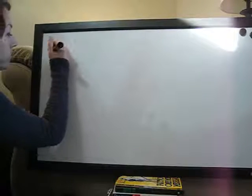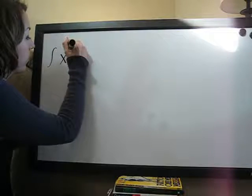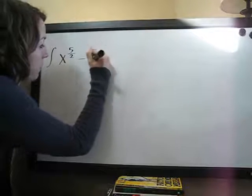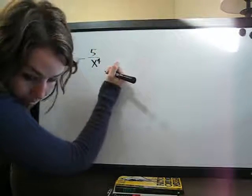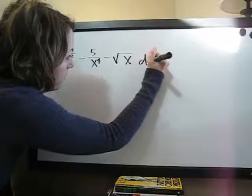Okay, the next problem we're going to do is the first one involving a square root. So we're going to have x to the 5 halves minus 5 over x to the 4th minus the square root of x dx.